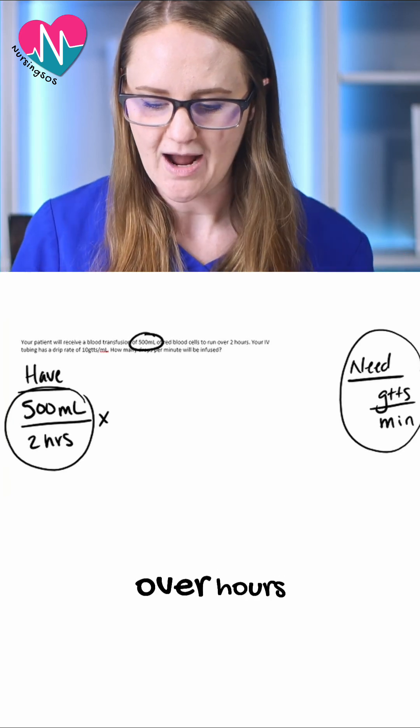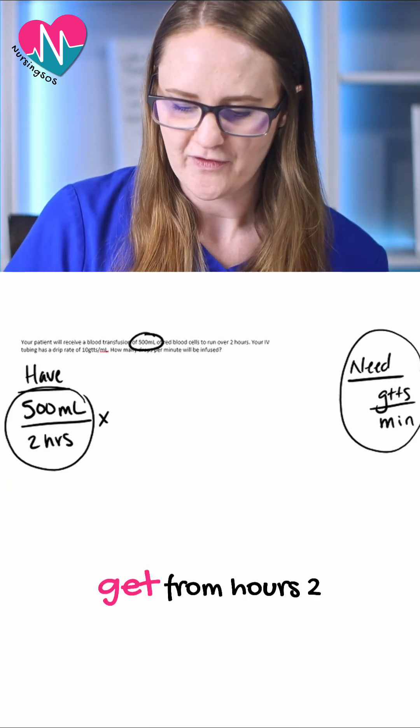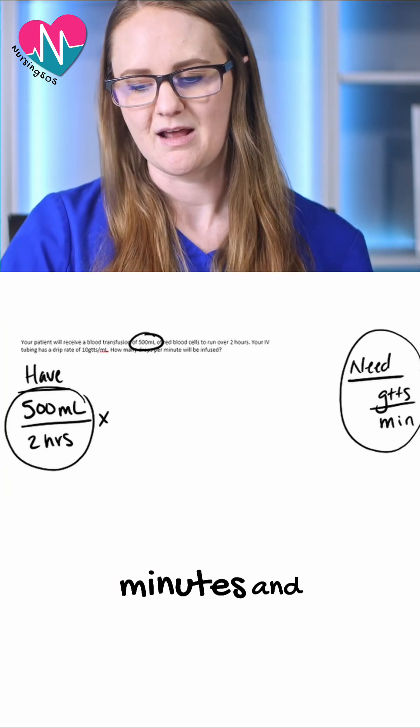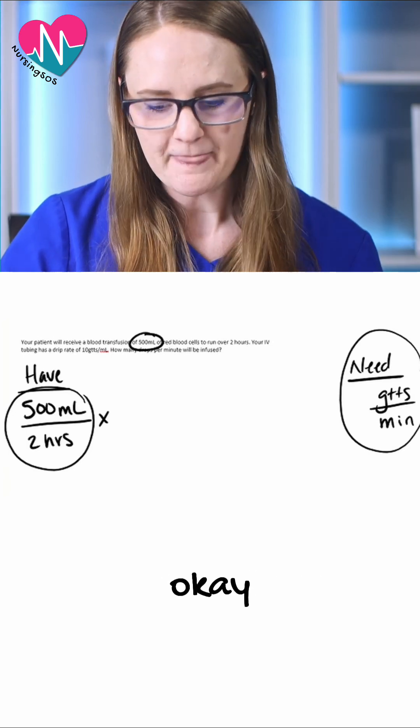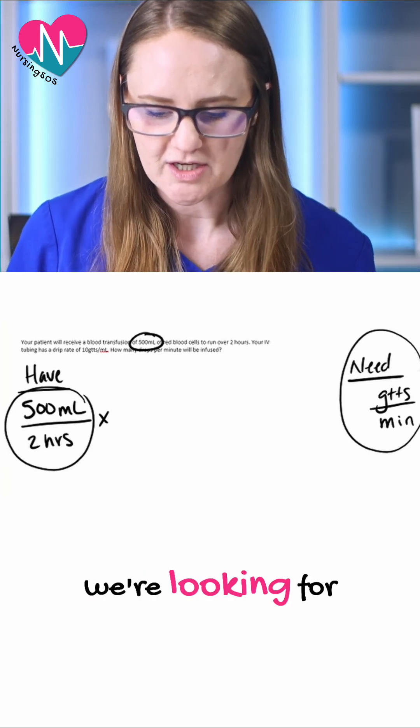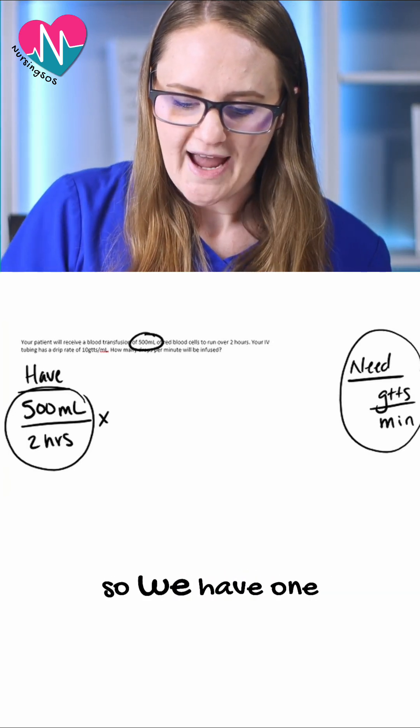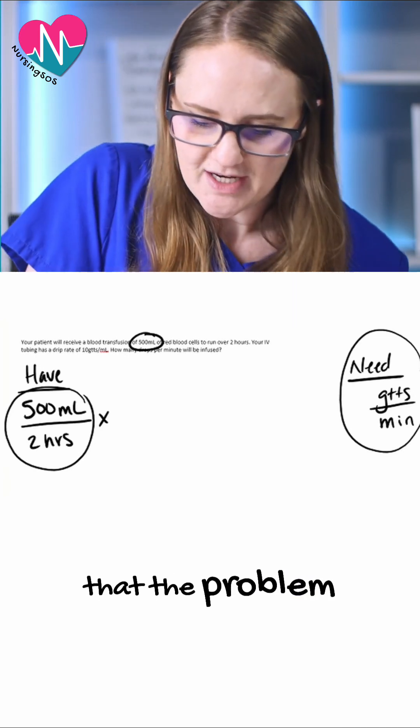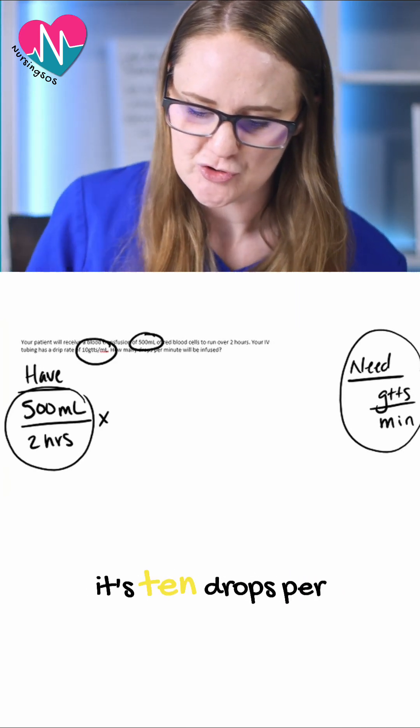We have milliliters over hours. Somehow we need to get from hours to minutes and milliliters to drops. That's the conversion we're looking for here. The problem gives us 10 drops per mL.